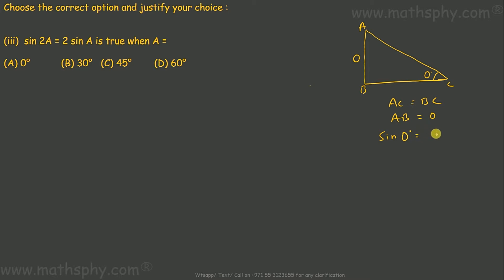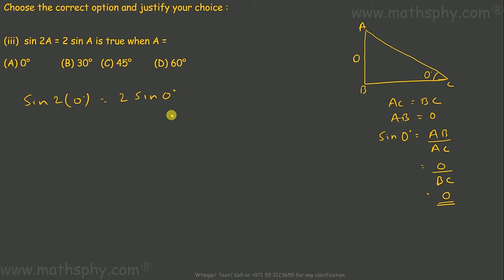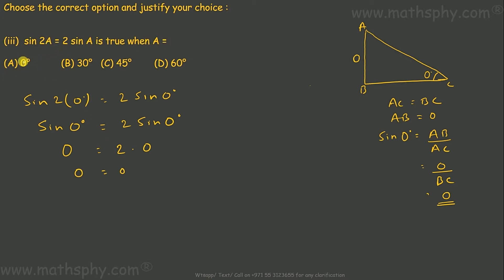So sine 0 degree will be what? If I write it as a, b over a, c — a, b is 0, a, c is b, c — so 0 over b, c means 0. So if I write here, sine 2 into 0 degrees equal to 2 sine 0 degrees. This is sine 0 degrees: 2 into 0 is 0. Sine 0 degree is equal to 2 sine 0 degrees. Sine 0 degrees is 0; 0 is equal to 2 into 0; 0 is equal to 0.